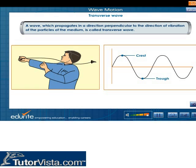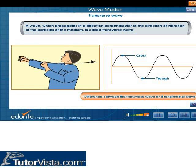The elevated portions of the string are called the crests and the depressed portions are called the troughs. Transverse waves propagate in the form of crests and troughs. Click on the link provided to know the difference between the transverse wave and the longitudinal wave.